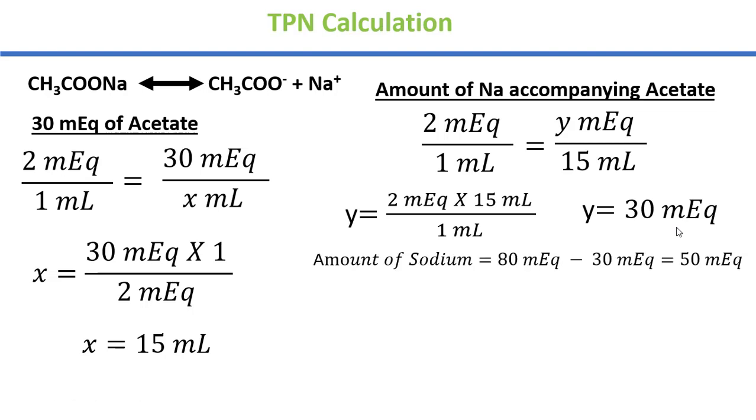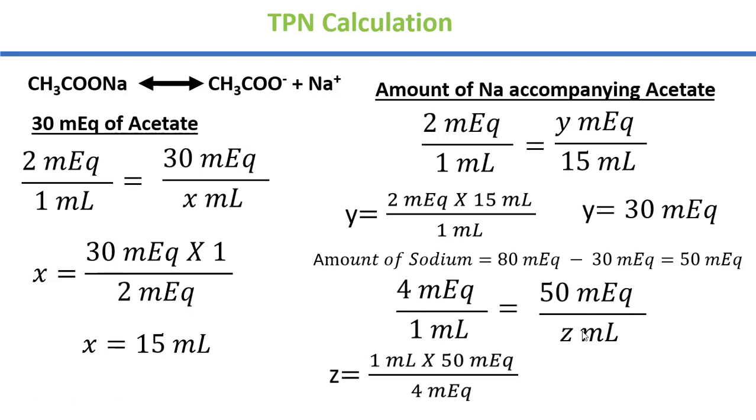Now the total demand is 80 milliequivalents. This will be subtracted, the amount of sodium. So you can get 80 minus 30, which equals to 50 milliequivalents. Now we have 50 milliequivalents remaining sodium to be given as sodium chloride. The stock solution is 4 milliequivalents per mL, so the volume will be 12.5 mL. The sodium chloride solution is 12.5 mL.